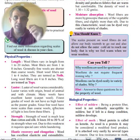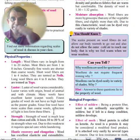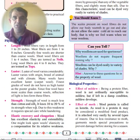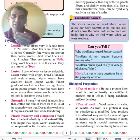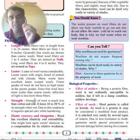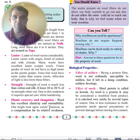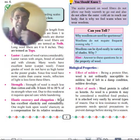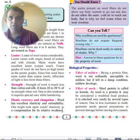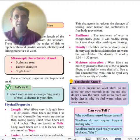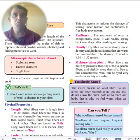Strength: wool is not as strong as cotton or silk, and it loses about 20% of its strength when wet. Elasticity: wool has wonderful elasticity and extensibility, which means it does not get damaged easily due to body movements.